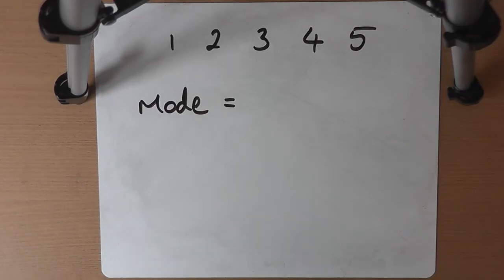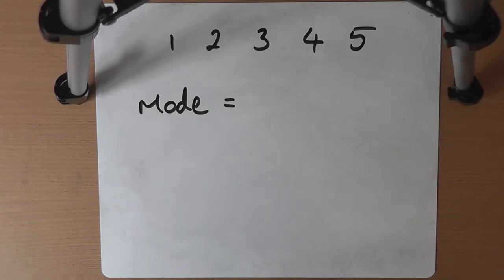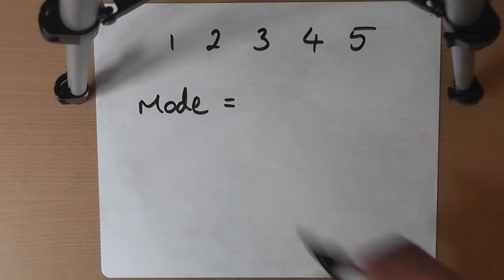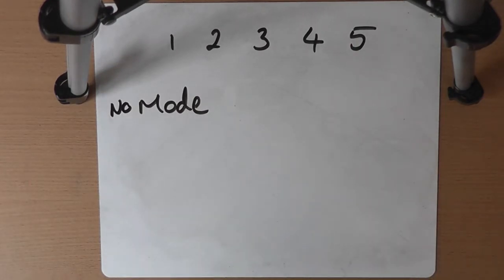The averages are not without limitations. Consider the data set 1, 2, 3, 4, 5 — what is the mode? The mode is the most common value, but they all appear exactly once, so there isn't a mode. It's not possible to find one. You can find a median and a mean, but in this case there is no mode — either they're all the mode or none of them are. That's just a limitation of the mode as an average, and that's okay.